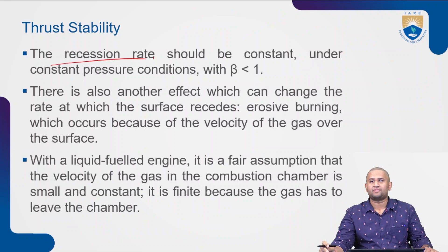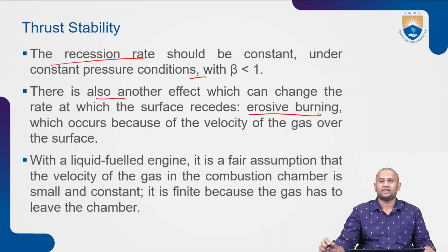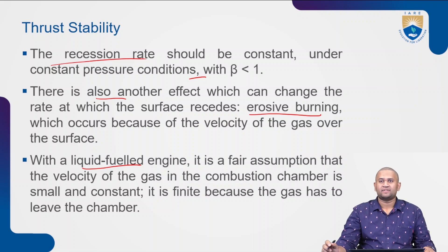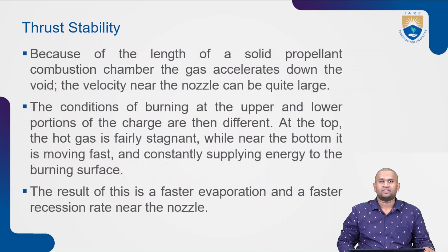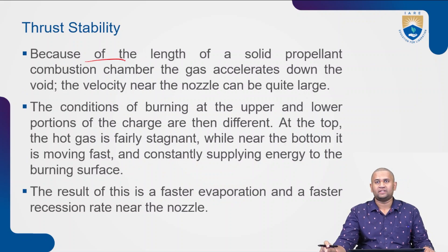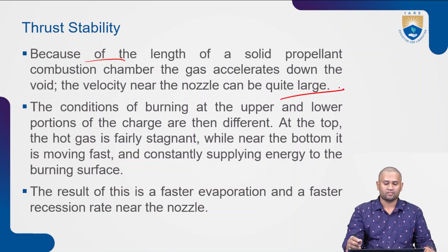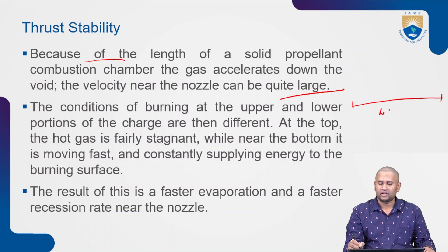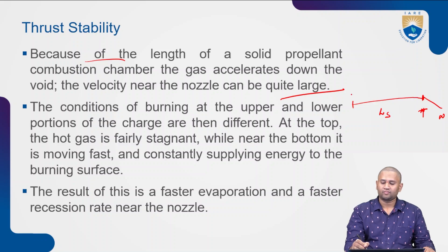The recession rate should be constant under constant pressure conditions where beta is less than 1. However, there is another effect that can change the rate at which the surface recedes, called erosive burning, which occurs because of the velocity of gas over the surface. With a liquid fuel engine it is a fair assumption that the velocity of gas in the combustion chamber is small and essentially constant. But because of the length of the solid propellant combustion chamber and the gas accelerating down toward the void, the velocity near the nozzle can be quite large. The solid rocket motor has a length, a nozzle throat, nozzle, and igniter.